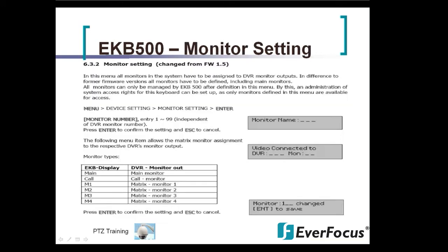Then you have your monitor setting. If you are using a couple of different DVRs — DVR 1 on one monitor, DVR 2 on a second, DVR 3 on a third — you want to name monitor 1 for DVR 1, monitor 2 for DVR 2, monitor 3 for DVR 3.